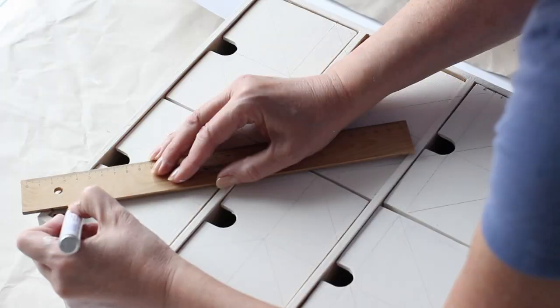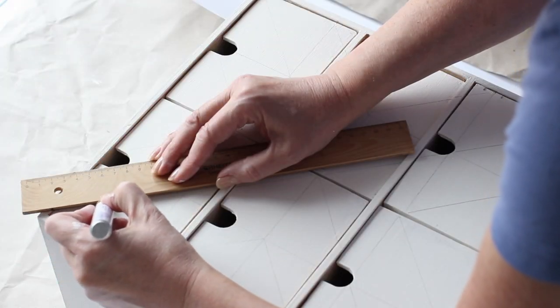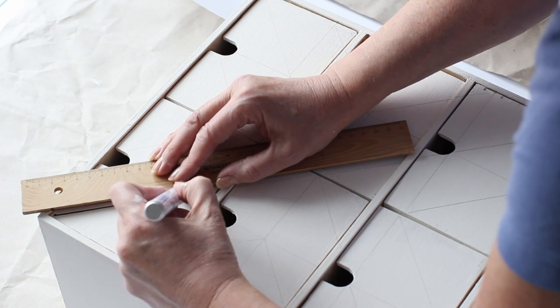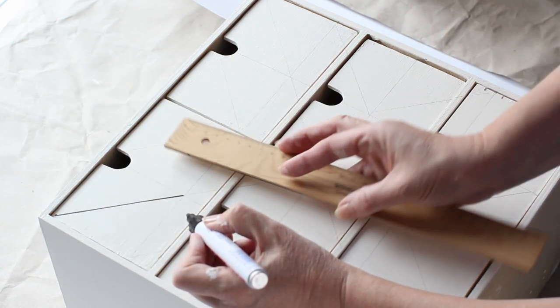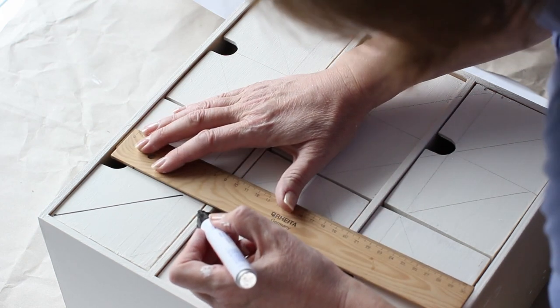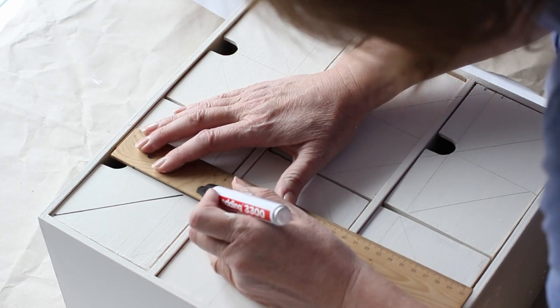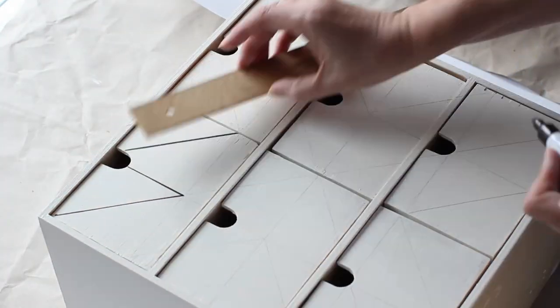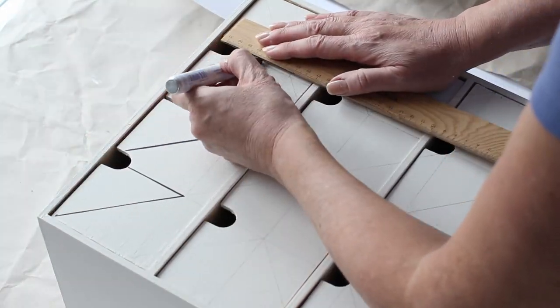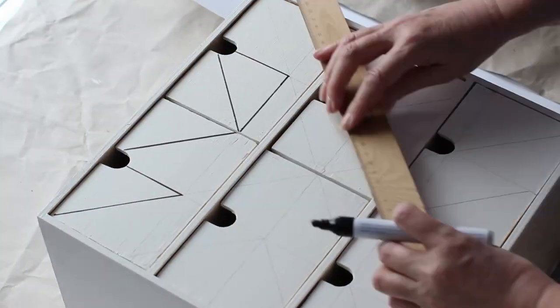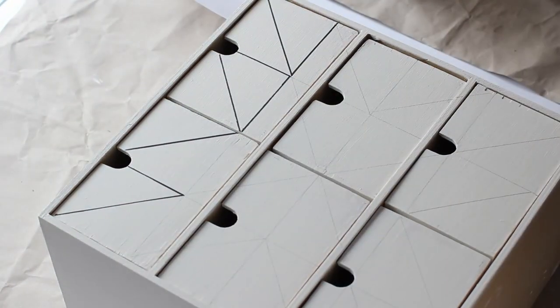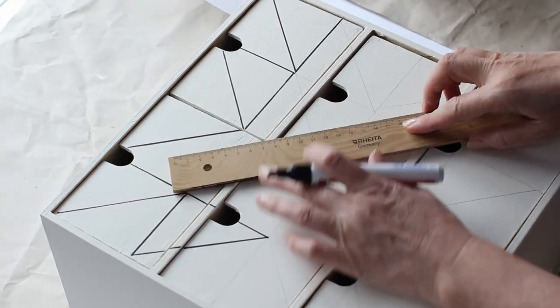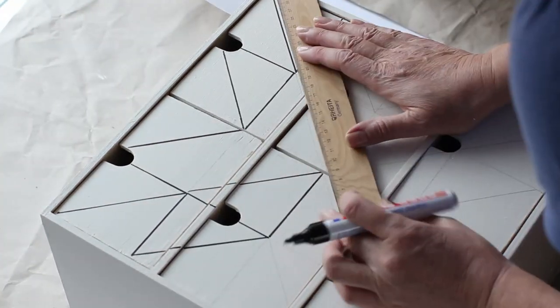The next step will be to draw in the lines with a marker pen. Now that the template has been transferred onto the front of the IKEA Mop, check and double check that the lines are correct. Then use a marker pen to fill in the lines of the template. I used a black marker pen because I wanted my farmhouse star quilt block design to be in black and white, but if you choose another color for your contrast color, then you'll also need to use that color marker pen to fill in the lines on your template.